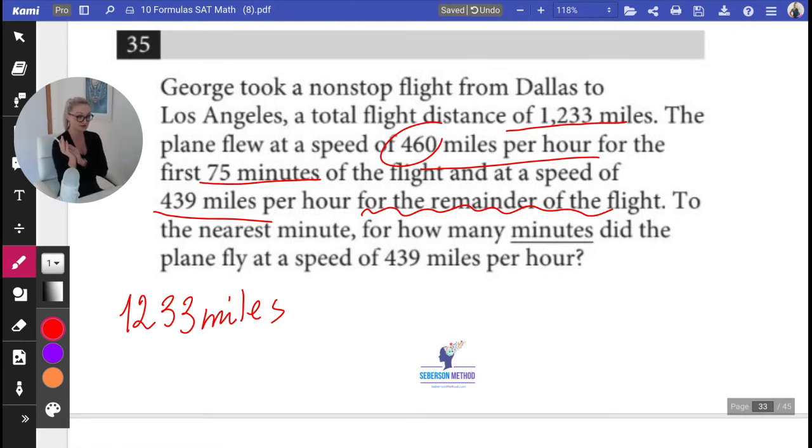The first distance is going to be for 75 minutes at 460 miles per hour. So let's represent that. That equals the first distance plus the second distance.